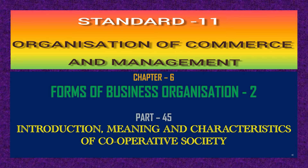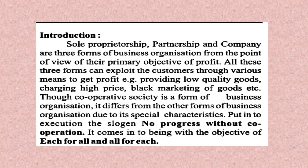New chapter — Chapter 6: Forms of Business Organization, Part 2, Part 45. Introduction: Sole proprietorship, partnership, and company are three forms of business organization. From the point of view of their primary objective of profit, all these three forms can exploit customers through various means, such as providing low quality goods, charging high prices, and black marketing of goods.